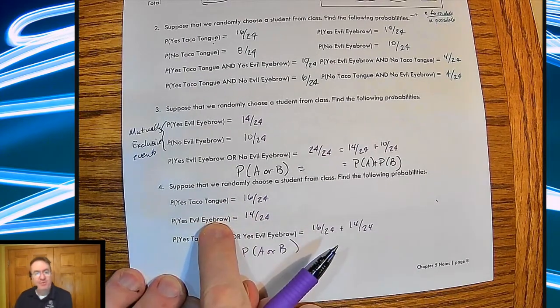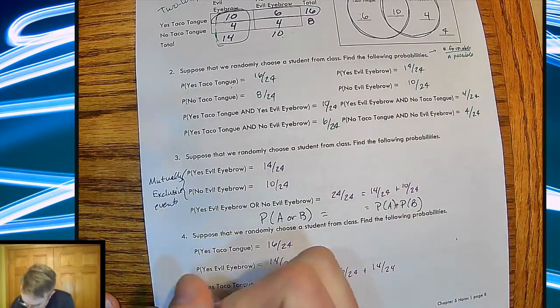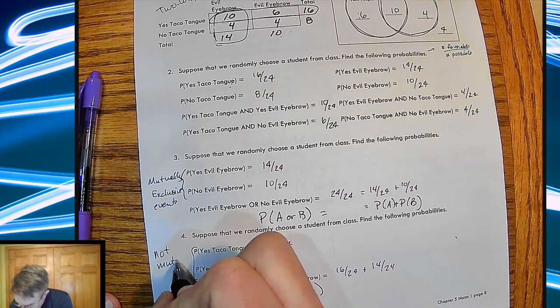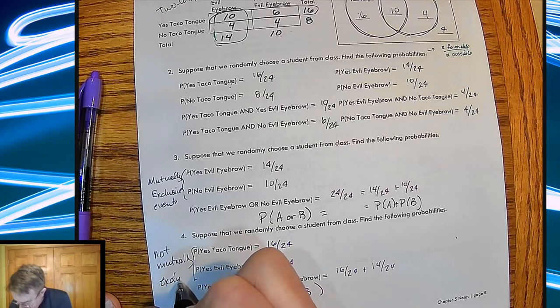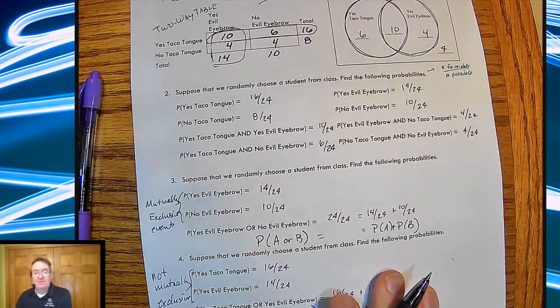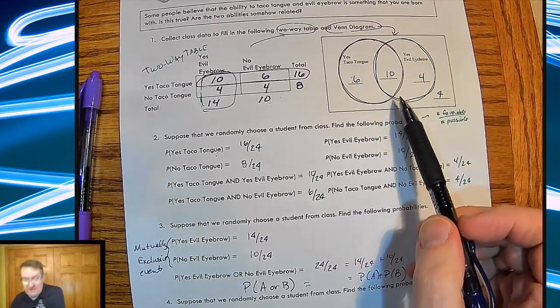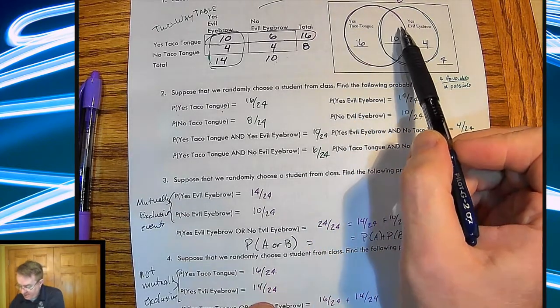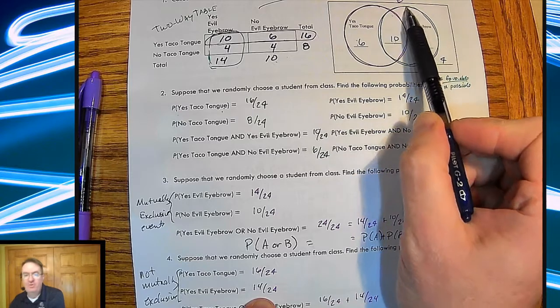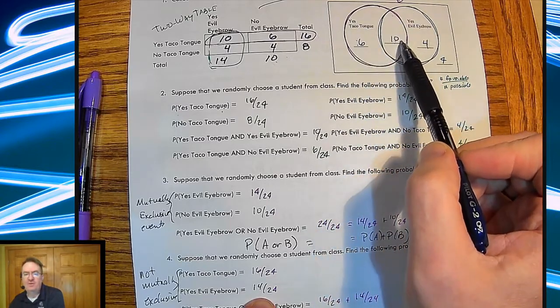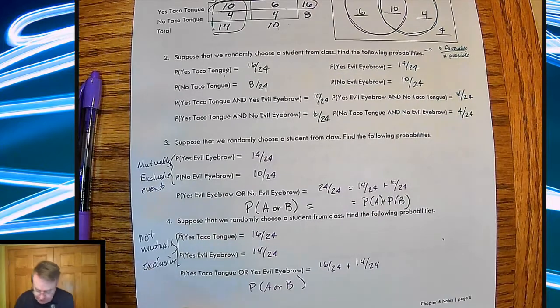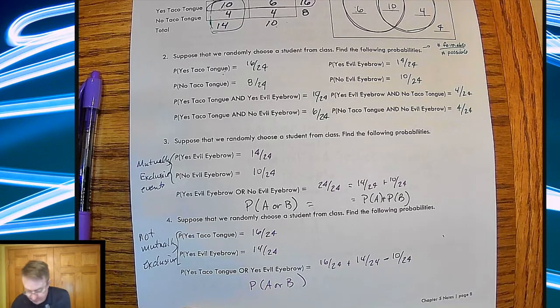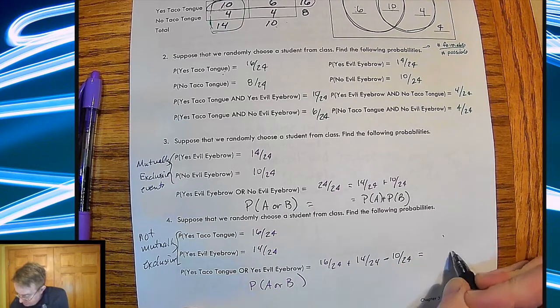So what's the problem here? Can't somebody be part of both of these groups? Well, yeah. Okay. So these are called not mutually exclusive. Because that means there's overlap. So notice here, we're counting in the 16, in the 16 taco tongue people, that's everybody in this circle. And we're counting everybody in this circle for my evil eyebrows. Wait a second. This is getting counted. The 10's being counted twice. So what you end up having to do, then, is that we need to subtract off our 10 out of 24. And so we're going to end up getting an answer of 20 out of 24.